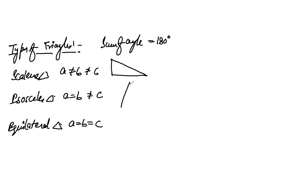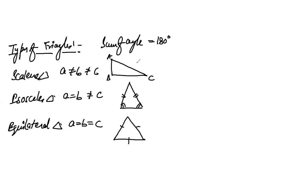One very basic and critical observation: the side opposite to the smallest angle will always be smallest, and the side opposite to the largest angle will always be largest. In an isosceles triangle the two sides are equal, and therefore the angles opposite to them are also equal. In an equilateral triangle, all three sides are equal and therefore all three angles are equal — 180 divided by three gives each angle as 60 degrees.